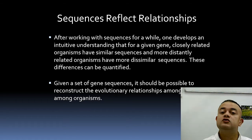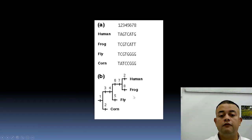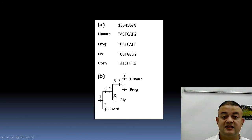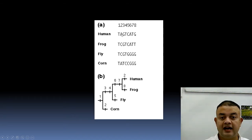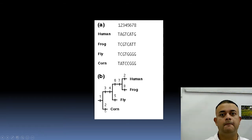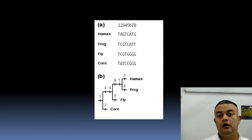You can examine relationships between species — human, frog, fly, and corn — by looking at where sequences differ. For example, frog and human are separated at positions two and eight; at position eight G-T-G-G, frog's T differs from the rest. Human differs at position two with A, while frog, fly, and corn share A. Tree construction algorithms include neighbor joining, maximum likelihood (ML), and Bayesian inference (BI).